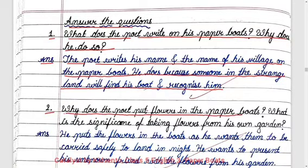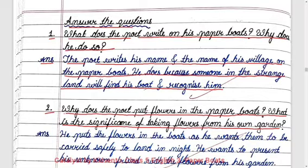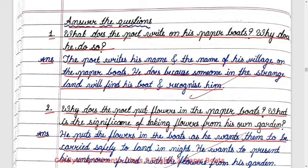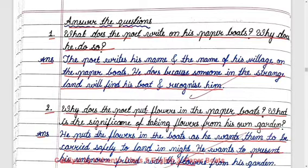Question two: Why does the poet put flowers in the paper boat? What is the significance of taking flowers from his garden? Answer: He puts the flowers in the boats as he wants them to be carried safely to land at night. He wants to present his unknown friend with the flowers from his garden.